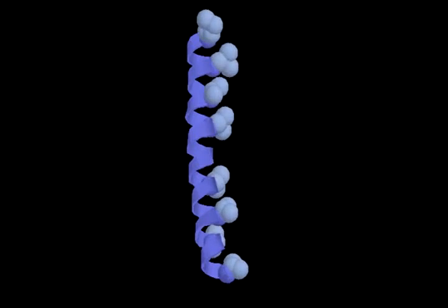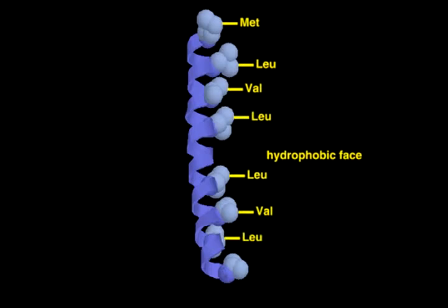One side of each helix contains mostly aliphatic amino acids, such as leucines and valines, while the other side contains mostly polar residues.